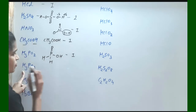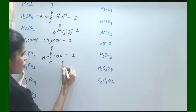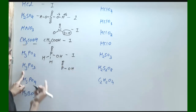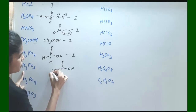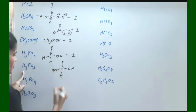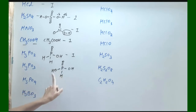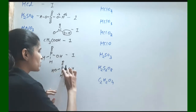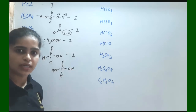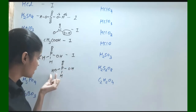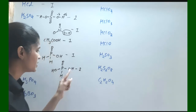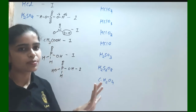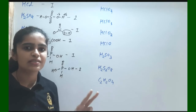Next is H₃PO₃. Its structure is P with double bond O, OH, OH, and H. The P–H bond is not highly electronegative, so that H is not replaceable. Only the two OH groups have hydrogen easily replaceable by base. So its basicity is equal to 2.